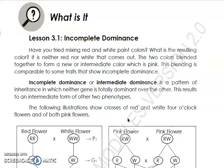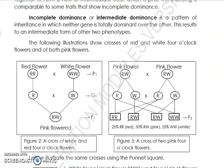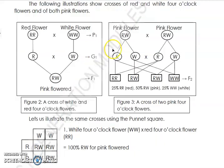Let's define incomplete dominance. Incomplete dominance, or intermediate dominance, is a pattern of inheritance in which neither gene is totally dominant over the other. This results in an intermediate form of the two phenotypes. Remember, phenotypes refer to physical appearance — something that we can see.